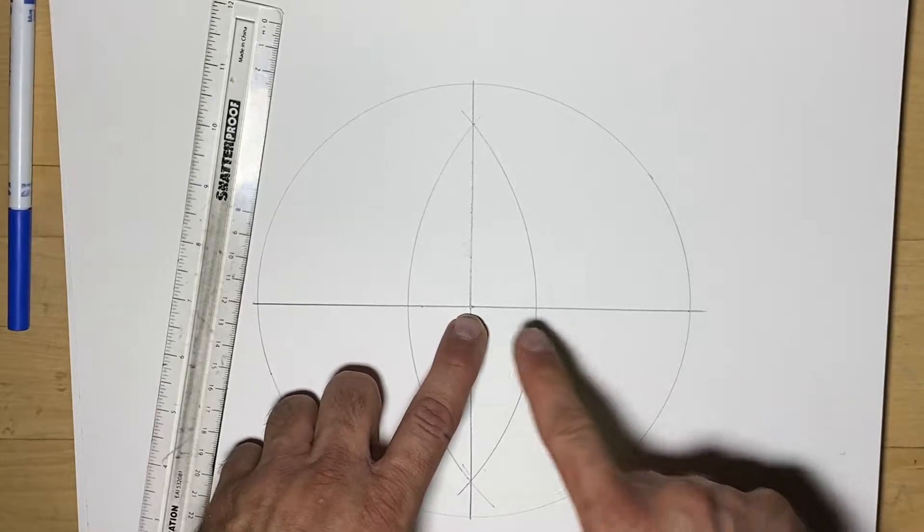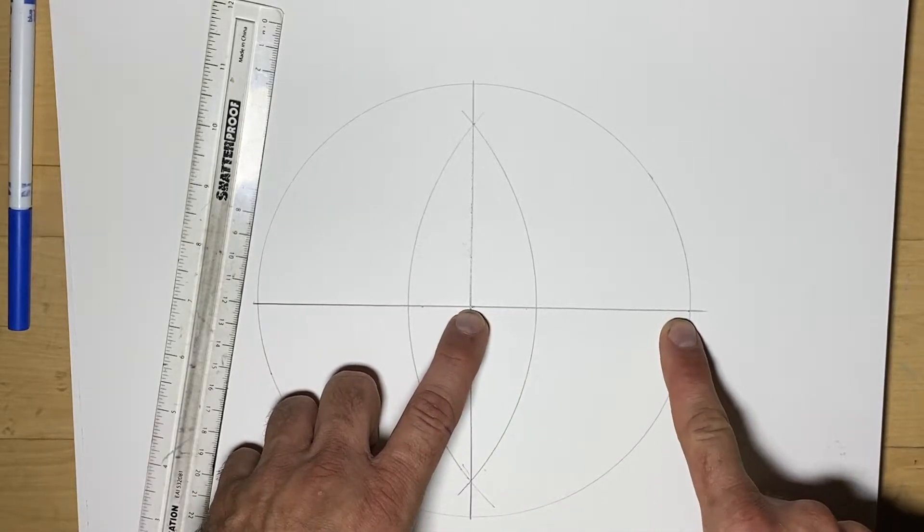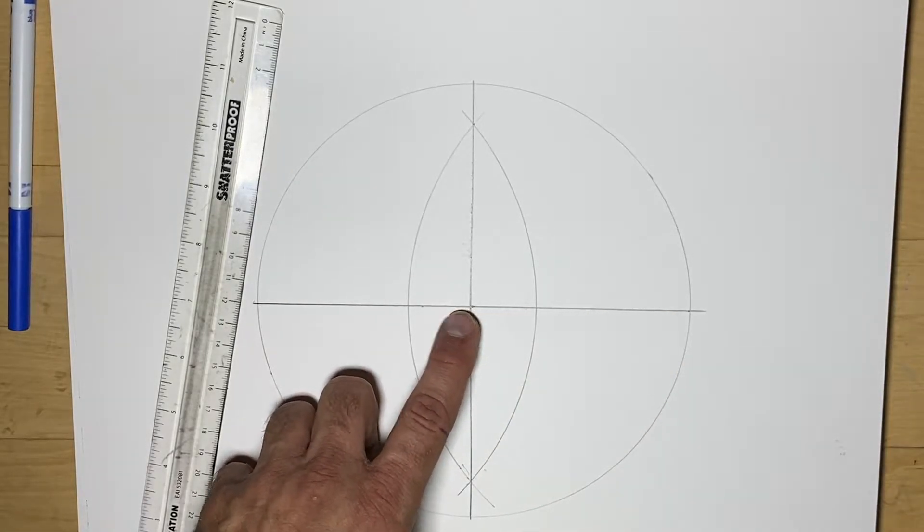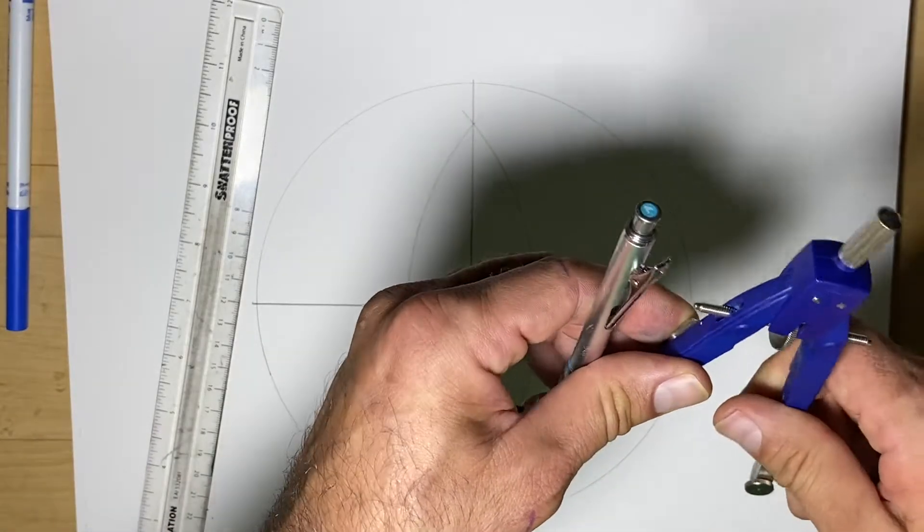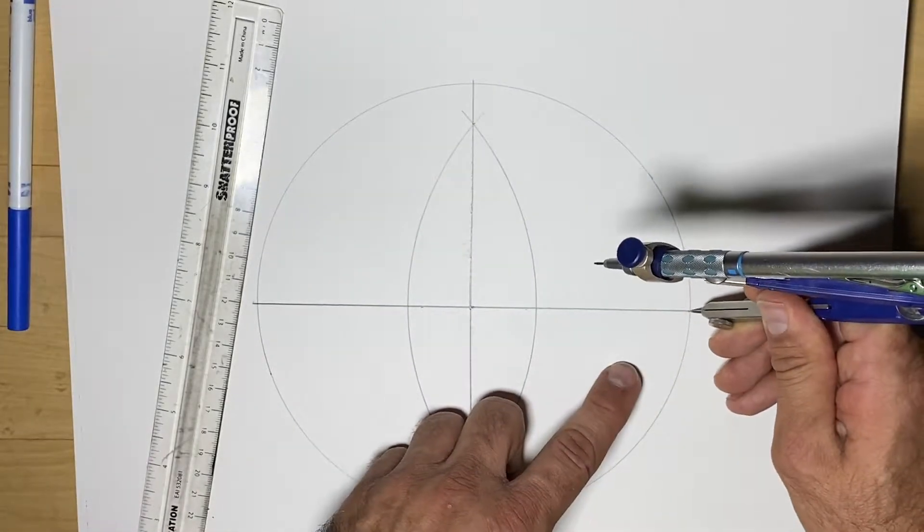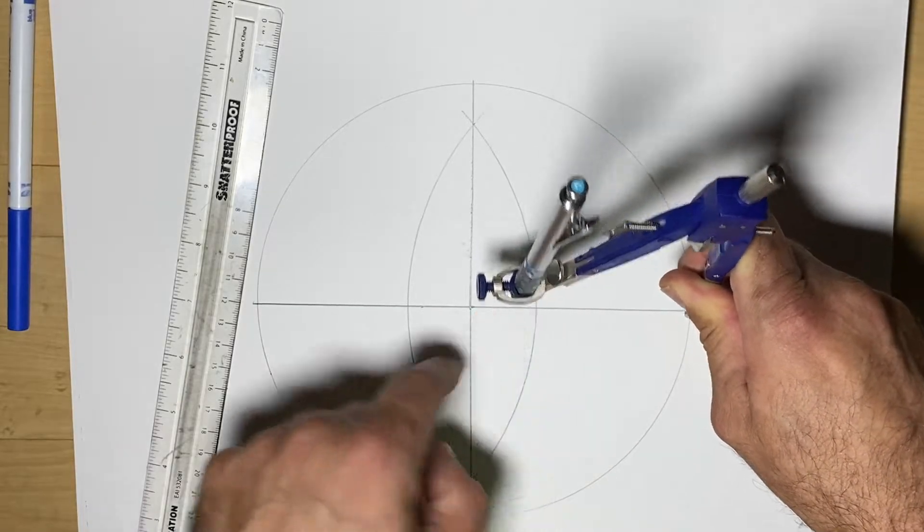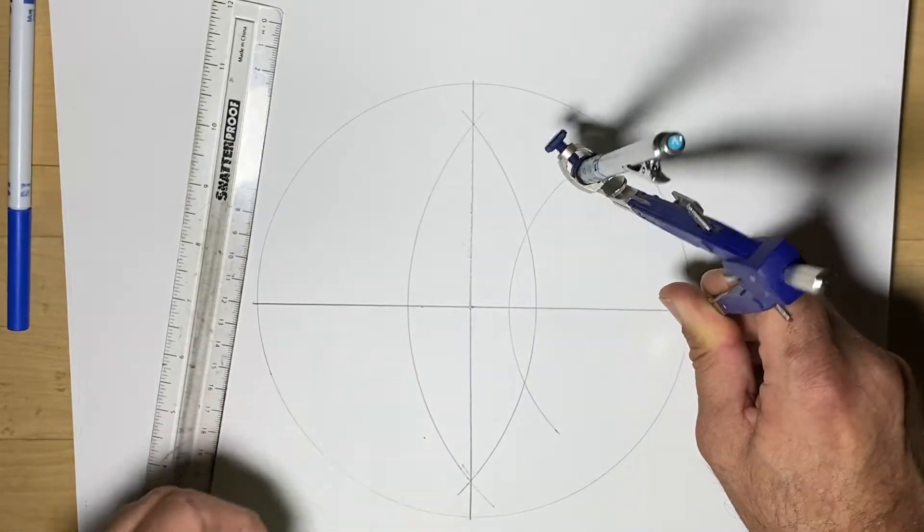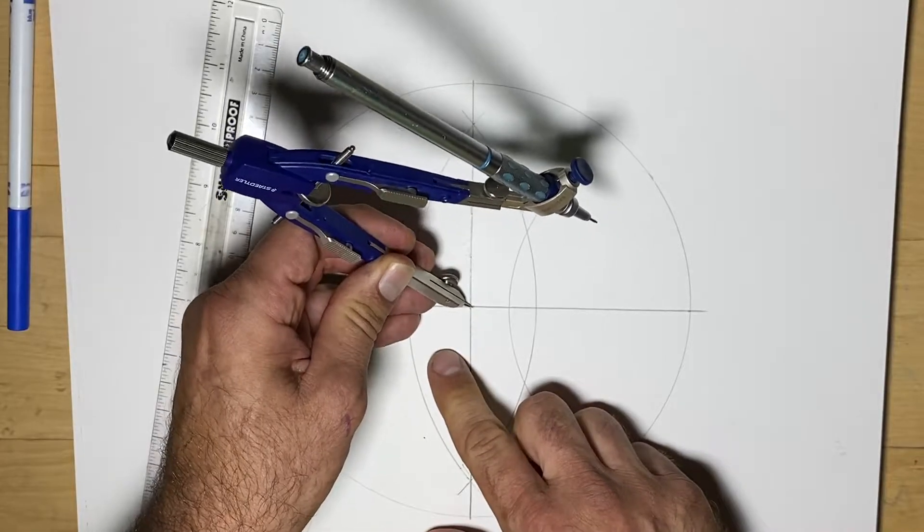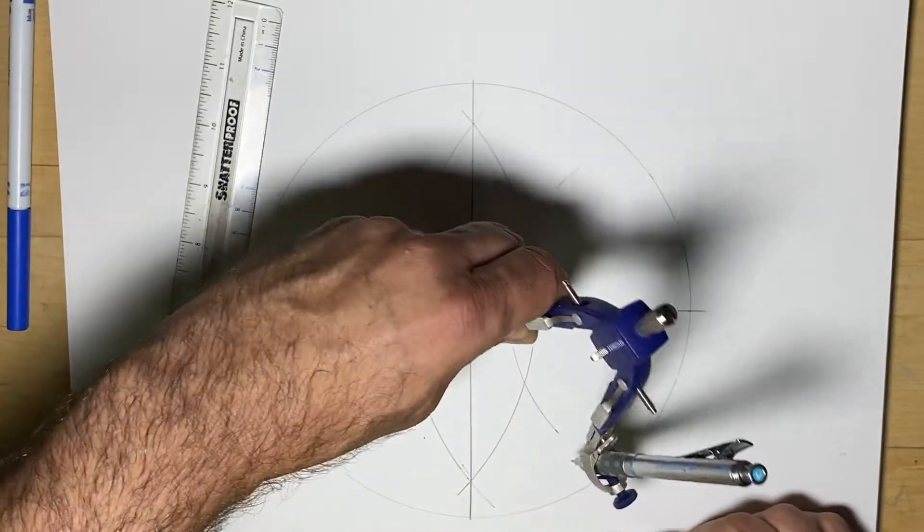The next step is to take this line here and cut it in half using the same method. I'm going to take my point—this kind of looks like the middle. I want to go past the middle, make an arc, go to the other side, make an arc.